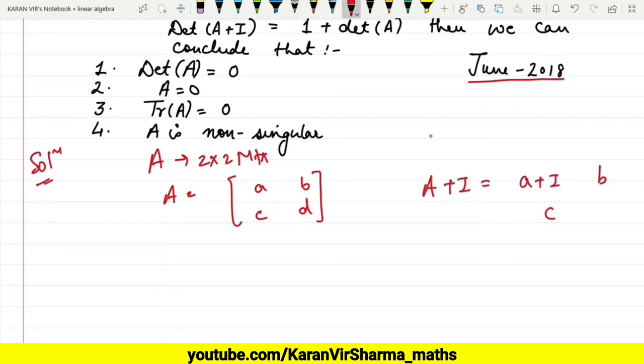And we are given that det(A+I) = 1 + det(A). So let's compute both determinants. Now we'll calculate the determinant of A+I and the determinant of A.